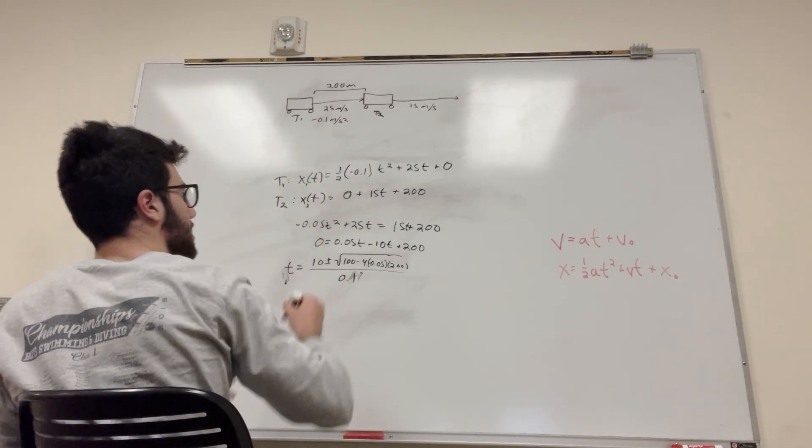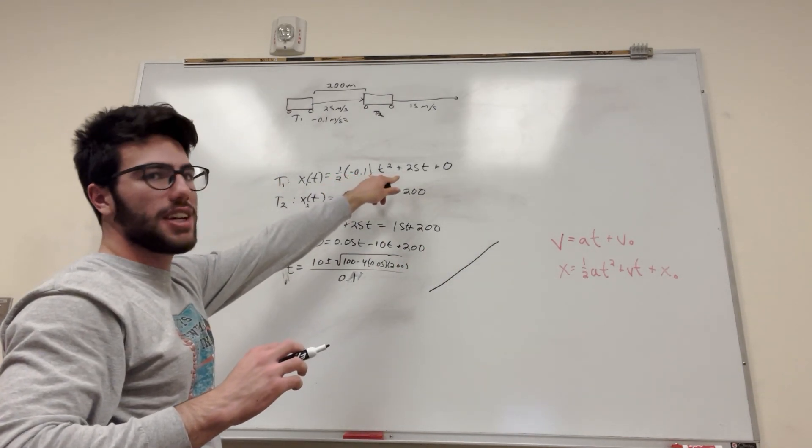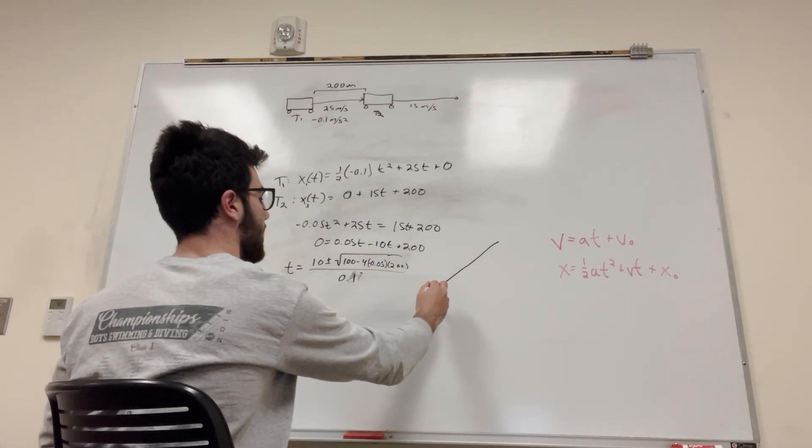This equation here is linear, basically. It's going to look like this. It's going to be a straight line. This equation is quadratic. That means it's going to look something like this.